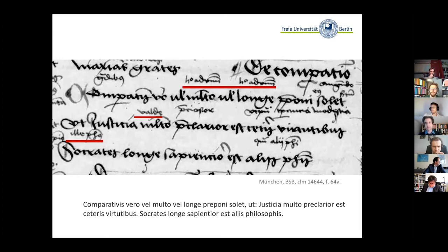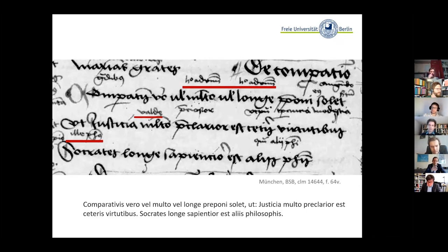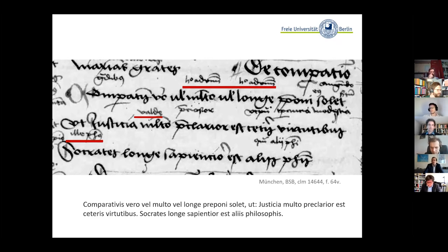These notes are short, comprising often only one or two words, and they represent basic explanations of the Latin text given by the master. These explanations help students to understand the actual meaning of the text and provide more information. This was very basic language education given in Ingolstadt rhetoric lectures, as the medieval university had hardly any entry requirements, so basic knowledge and skills had to be taught in these courses, which stood at the very beginning of the study program at the Arts Faculty.